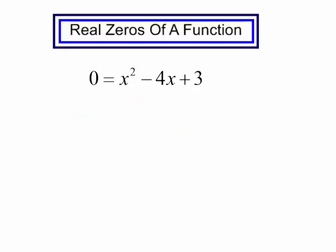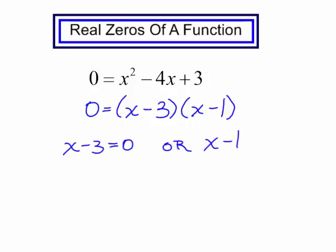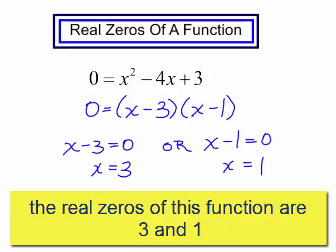This is a quadratic equation, so I will solve this by factoring. I will have 0 equals x minus 3 times x minus 1. I will now use the zero product property. I will solve each of these equations. The real zeros of this function are 3 and 1.